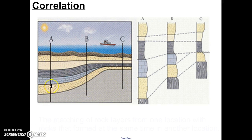Suppose that you were at location A in this picture. If you were to drill down, you would drill through one, two, three, four, five, six, seven layers of rock. In location C, if you were to drill down, you would go through one, two, three, four, five, six layers.